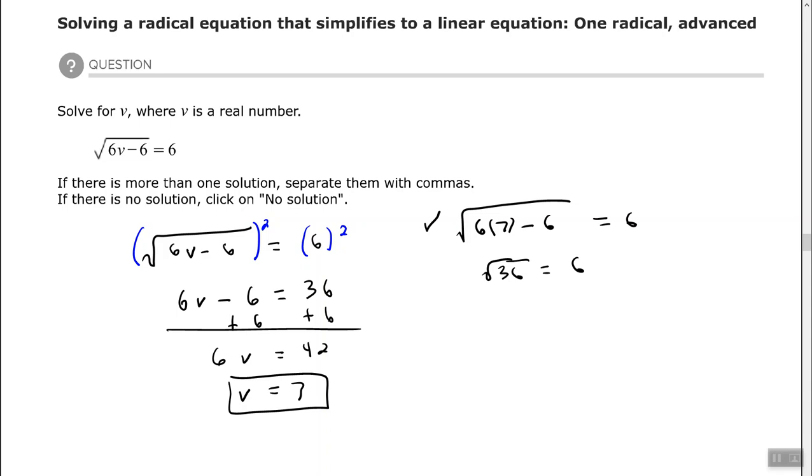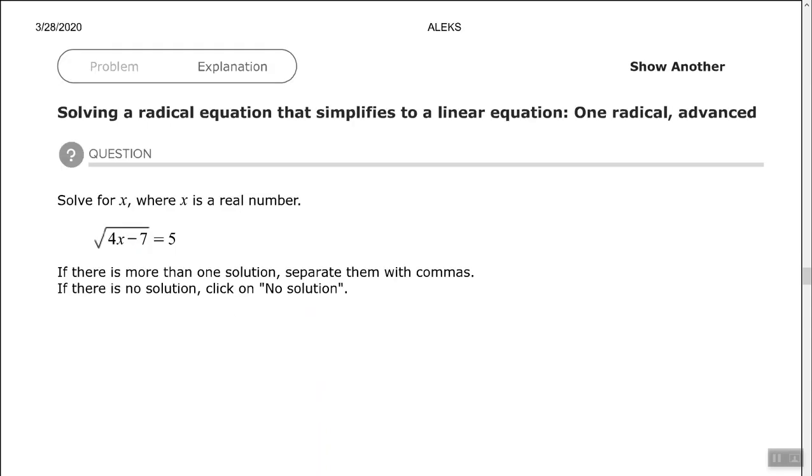All right let's try another one. So here we have the square root of 4x minus 7 equals 5. We check that the radical is isolated and it equals a positive number. So let's begin solving it.